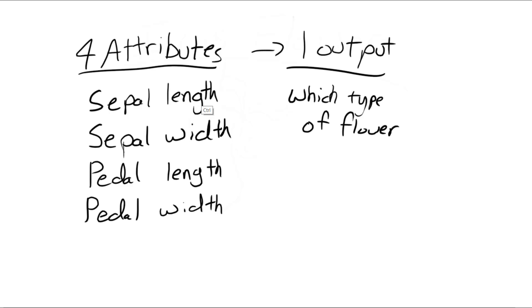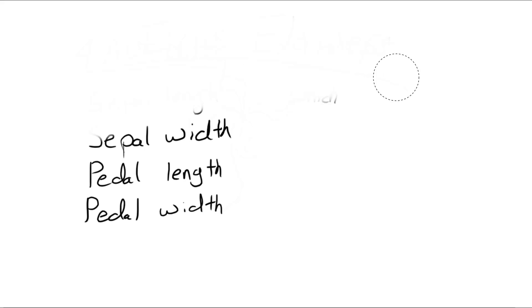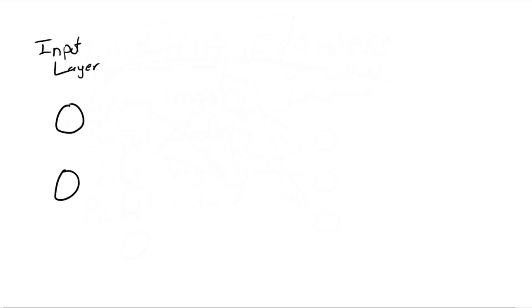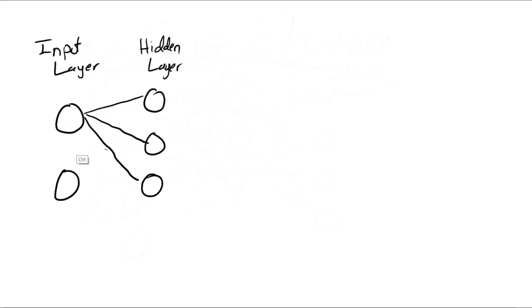Neural networks are generally very good at this type of classification, though it does specifically depend on the problem. If we look at our neural network, what we actually do is take our input layer, which has different nodes — also referred to as neurons, as a neural network is very loosely based on an early representation of the brain. Next we have a hidden layer.